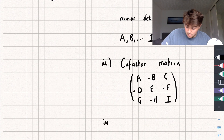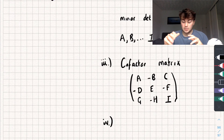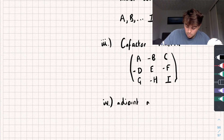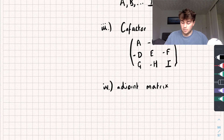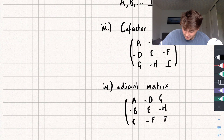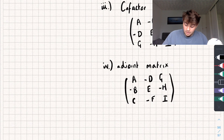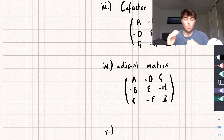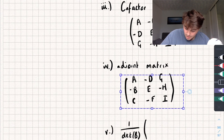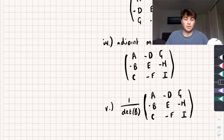Once we've done that, we find what's called the adjoint matrix, which is found by transposing the cofactor matrix. When we take the transpose, we make all the columns the new rows and all the rows the new columns. So the adjoint matrix is the transpose of the cofactor. Finally, the last step: once we've found the adjoint matrix, we multiply it by 1 over the determinant of matrix B, giving us the inverse of B.